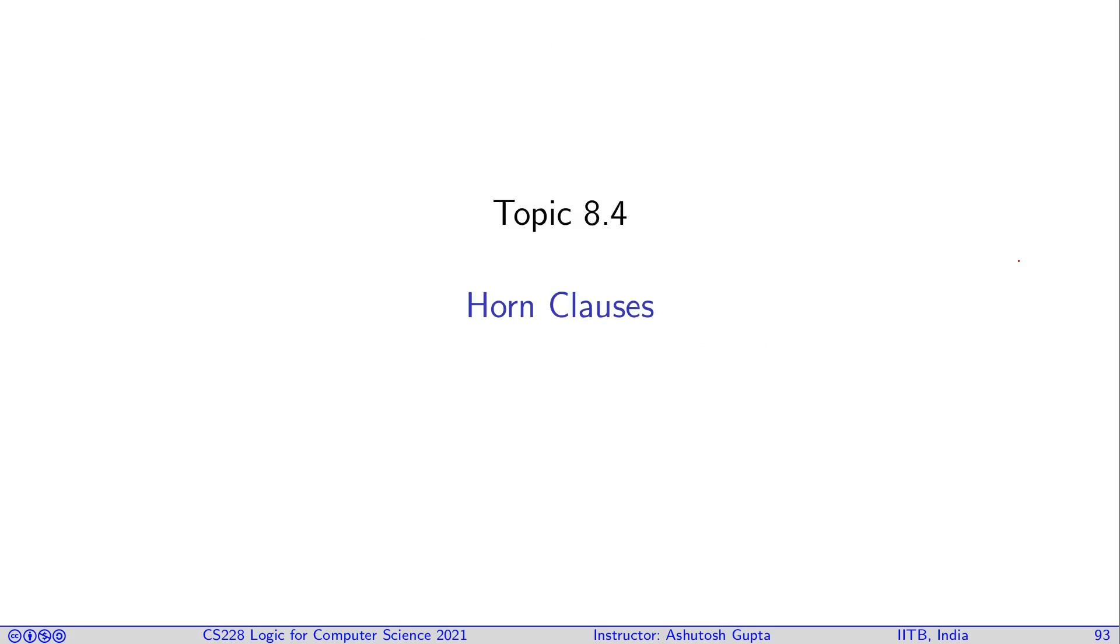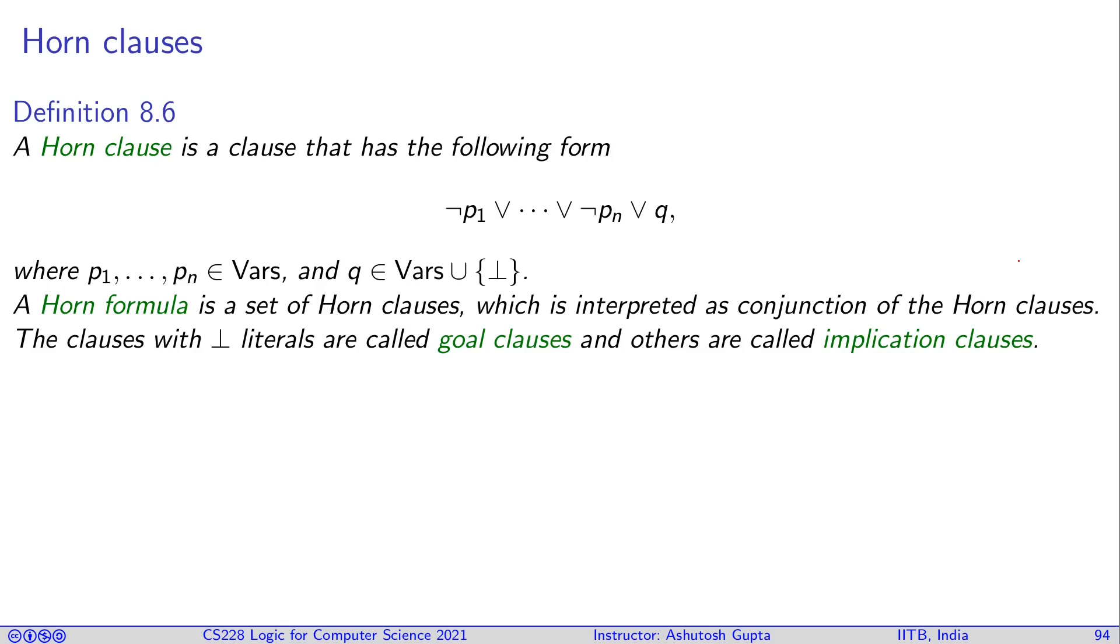Now let's consider another class of formulas called Horn clauses. These can also be solved efficiently. A Horn clause has many literals, and at most one literal occurs in a positive way. It may be the case that no literal is positive – all are negative, which is also allowed. A Horn formula is a set of Horn clauses interpreted as their conjunction. Clauses with all negative literals are called goal clauses, and others are called implication clauses.